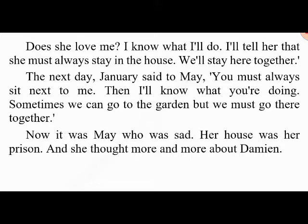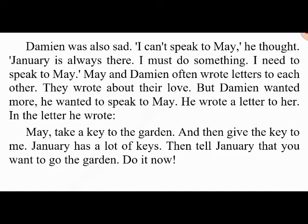The next day January said to May: 'You must always sit next to me — then I'll know what you're doing. Sometimes we can go to the garden, but we must go together.' Now it was May who was sad — her house was a prison and she thought more and more about Damien. Damien was also sad: 'I can't speak to May — January is always there. I must do something.' May and Damien often wrote letters to each other about their love, but Damien wanted more — he wanted to speak to May.